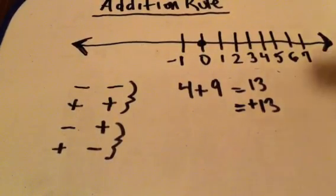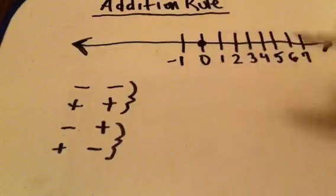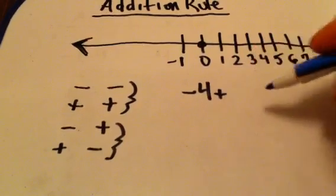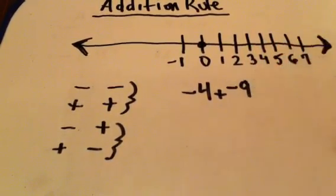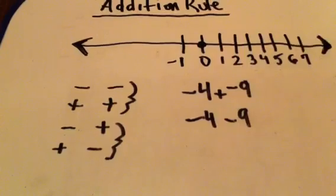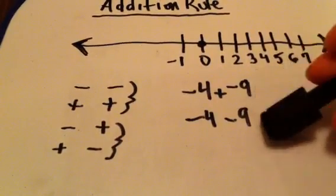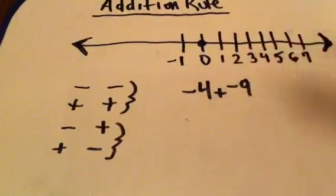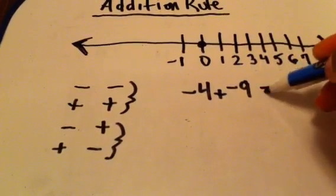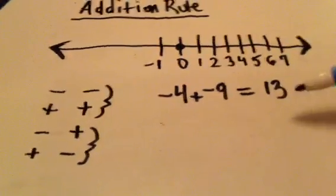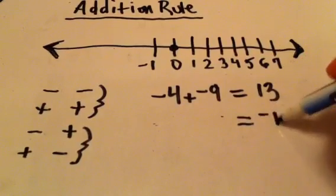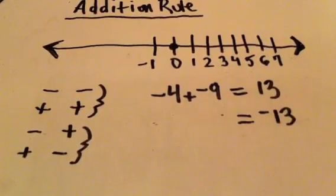Let's look at what this would be if we had two common signs that were negative. You have negative 4 plus negative 9 — another way to write this is minus 4 minus 9. Negative 4 plus negative 9 is the absolute value of 4 plus the absolute value of 9, which is 13. The final answer takes the common sign of both numbers, and here the common sign is negative, so negative 4 plus negative 9 equals negative 13.